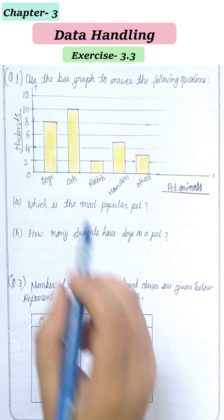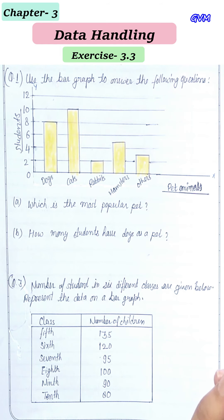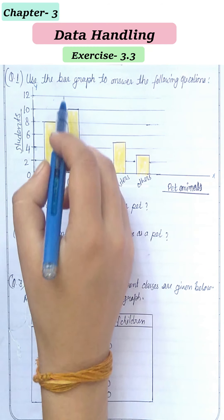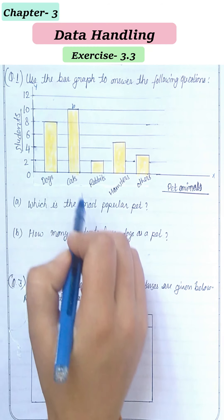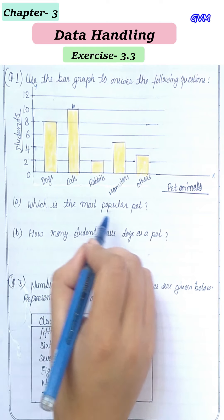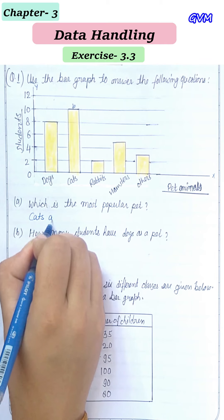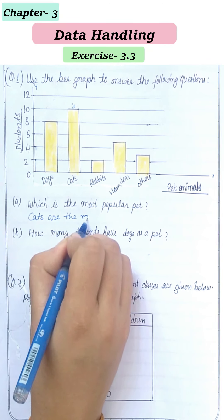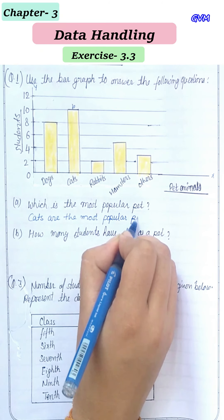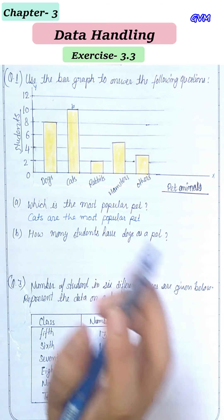Part (a) asks which is the most popular pet — meaning which pet do students like the most. We can clearly see that one bar is going very high, up to 10, and this bar represents cats. So the most popular pet is cats, liked by 10 students.